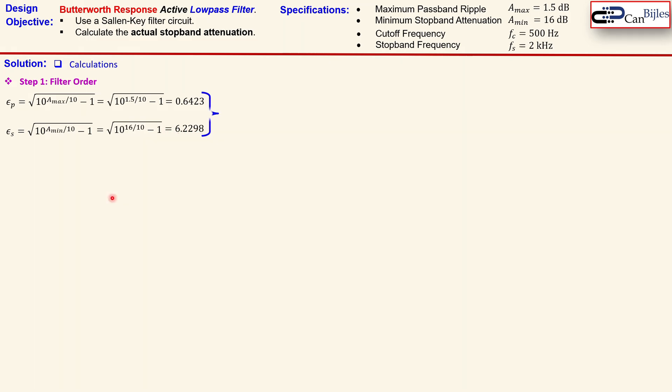And now we'll take these two values and use a formula for determining the filter order. That is given by this expression. We have a log of the ratios of epsilon_s and epsilon_p and we also have the ratio of the stopband frequency and the cutoff frequency. So we just substitute here the values and we get here 1.6389.